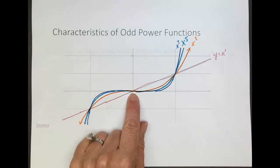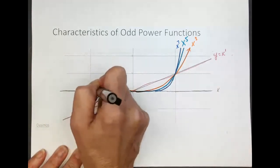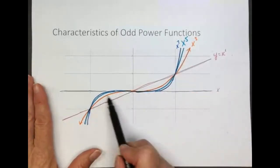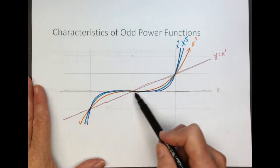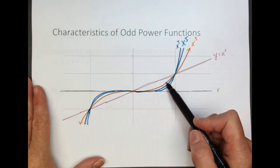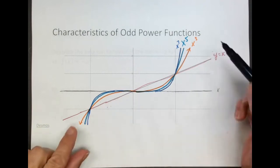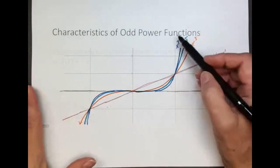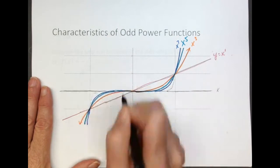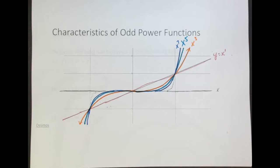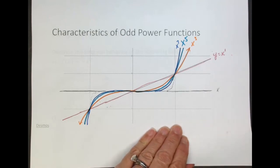Also look at what happens at the horizontal intercept. For the identity function, x to the first, the line goes right straight through — no lingering or squaring. For the cubic function, there's a little bit of lingering, a little squaring near the intercept. For x to the fifth, it lingers longer. x to the seventh, even more. If I were to put x to the hundredth on here, it would linger a very, very long time. So for odd-powered functions, the end behavior is the same, but the lingering near the intercept increases as the exponent increases.